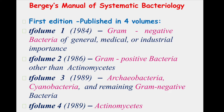In Bergey's Manual of Systematic Bacteriology, the first edition has four volumes. Volume one consists of gram-negative bacteria of general, medical, and industrial importance. Volume two consists of gram-positive bacteria other than actinomycetes. Volume three consists of archaeobacteria, cyanobacteria, and remaining gram-negative bacteria.